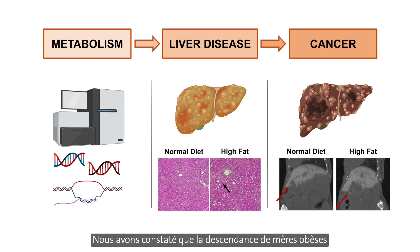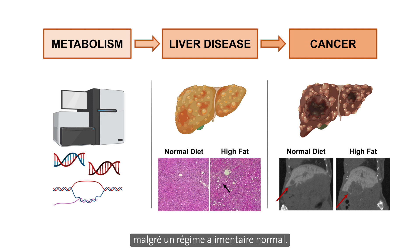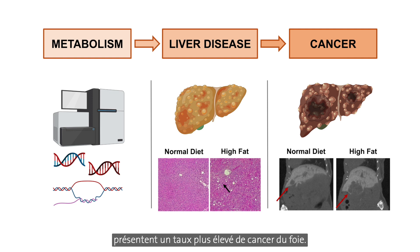We found that offspring of obese mothers develop signs of non-alcoholic fatty liver disease despite receiving a normal diet. More importantly, these offspring also have a higher risk to develop liver cancer.